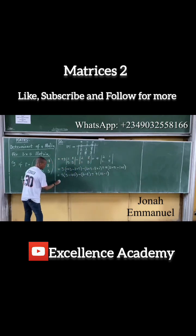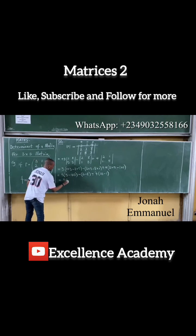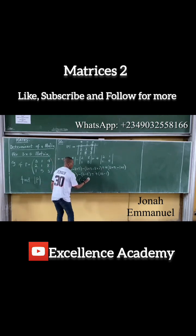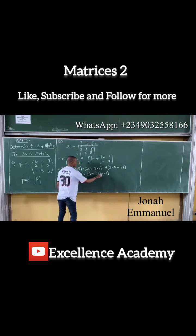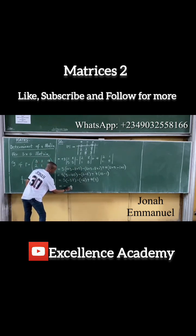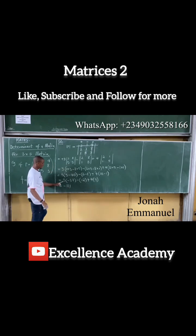So this is now equal to 3 into 3 minus 40, minus 2 into 6 minus 8, plus 4 into 10 minus 1. Expanding the brackets: 3 times 3 is 9, 9 times 11... 3 times 7 is 21, 3 times 3 is 9, plus 3 is 11, minus 11.